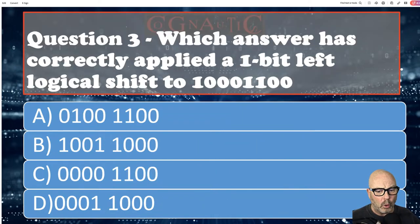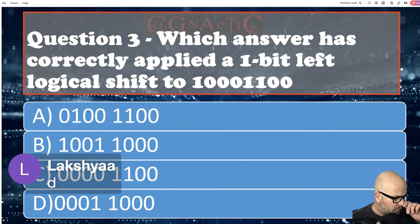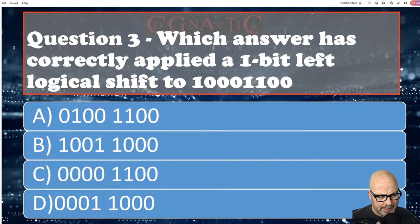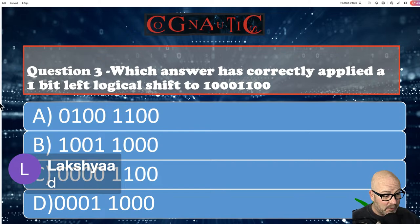Which answer has correctly applied a one-bit logical left shift to 10001100? We've got six in. Dan's gone for D, Lakshaya's gone for D — shall we see if you're right? The answer is D. Spot on. That's a really easy way to pick up marks here. If you're struggling with this, have a look back at the live stream from last time. They nearly always ask you to do a logical shift, or what's the impact of a logical shift.